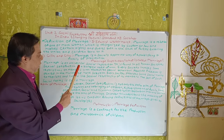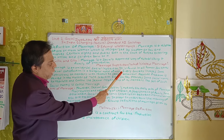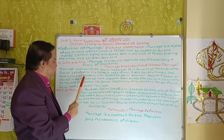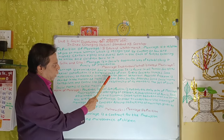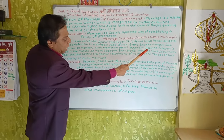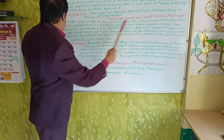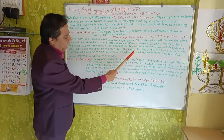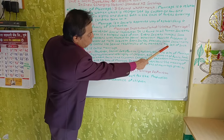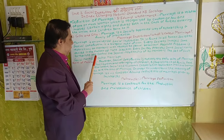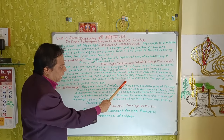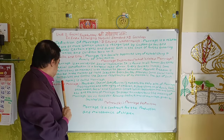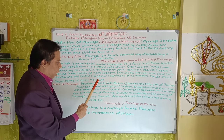Sexual satisfaction is the biological need of man. Every society imposes some restrictions on members with respect to sexual behaviour. Absolute freedom is denied in the matter of mate selection. Every society provides some social norms to regulate and control the sexual relationships of each member. The set of such social norms is called marriage.